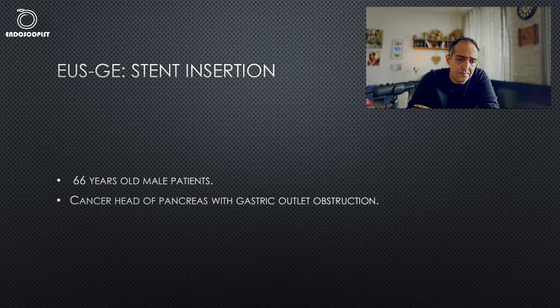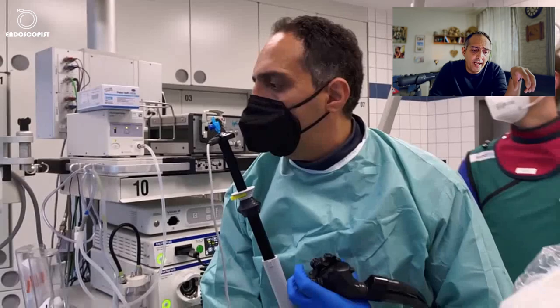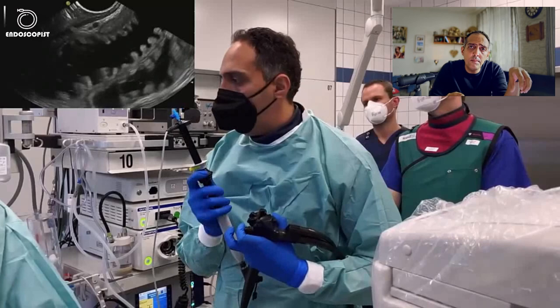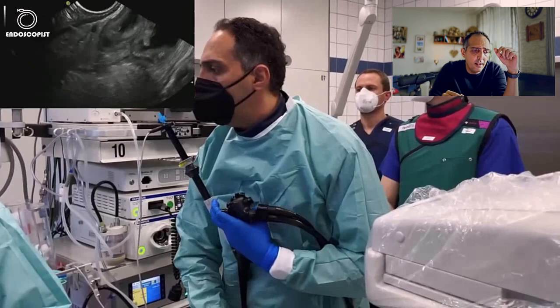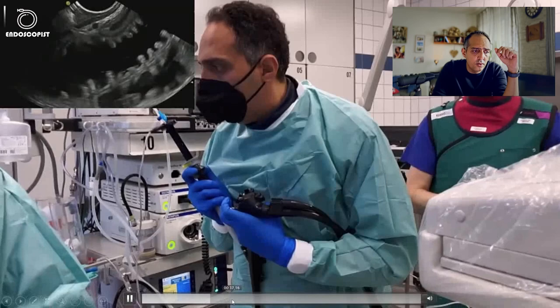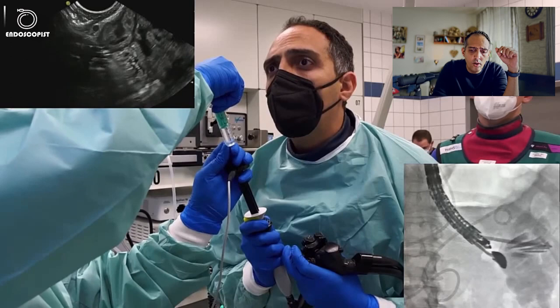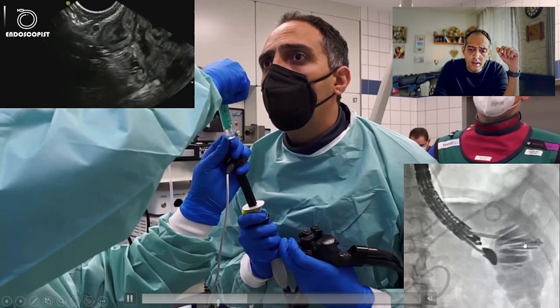Here is the video of the gastroenterostomy insertion. With EOS guidance, we locate the small bowel loop and then insert the hot axios stent. By giving contrast medium through the stent, we can see on the right corner the enterography, which proves that we are in the right loop.